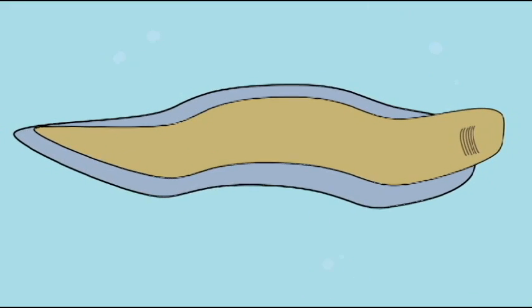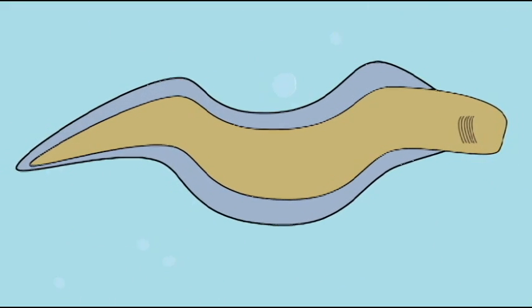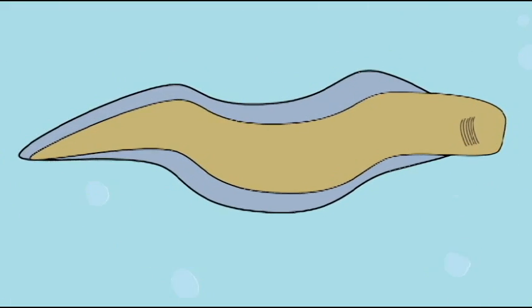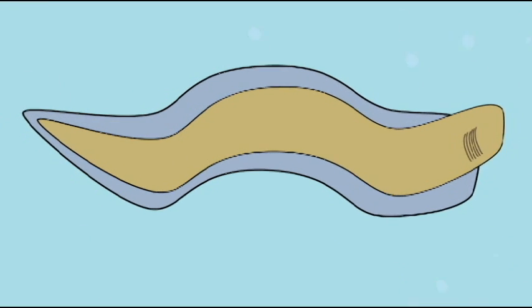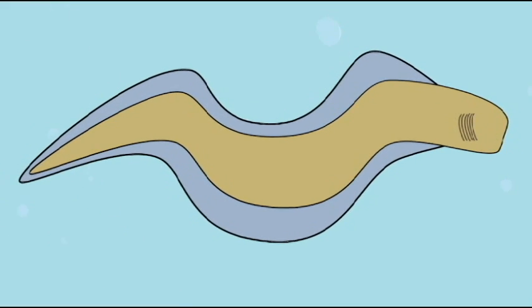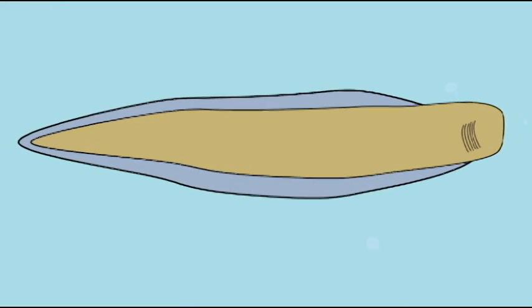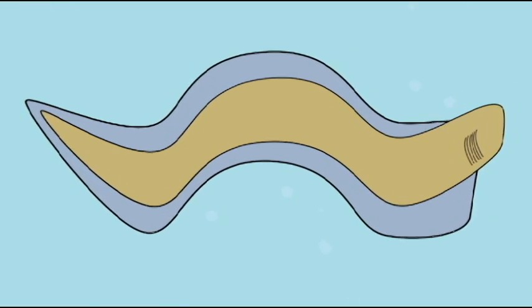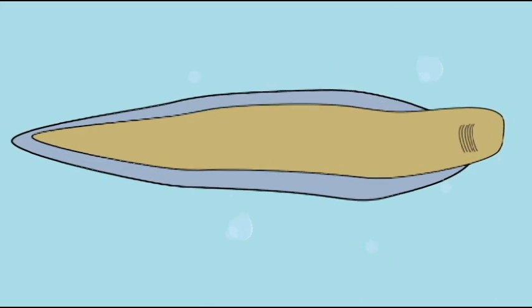They possess a post-anal tail where the digestive system does not go to the end of the body. Their nervous system is hollow and along their back as opposed to being solid along their front. They have the beginnings of a liver, they have the beginnings of a hypothalamus and pituitary gland.